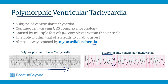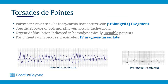For example, a patient with a STEMI can have ischemia to the entire anterior wall of the left ventricle, which often leads to polymorphic VT with lots of abnormal foci of electrical activity. Torsade de Pointes is a special subtype of polymorphic ventricular tachycardia that occurs in patients who have a prolonged QT segment on their surface ECG.